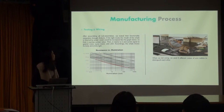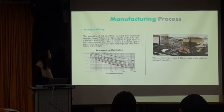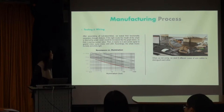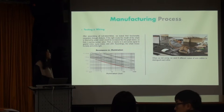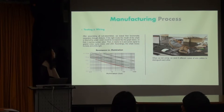In terms of testing and wiring, after assembling all sub-assemblies, we tested their functionalities separately through Arduino. If the light inside the mouth of the whale is blocked by a ball, resistance would be increased, so that it reaches a certain value. Then it reacts and sends signals to the motor, sub-motor, and the LED. Accordingly, the whale moves its body, and then it's flat.